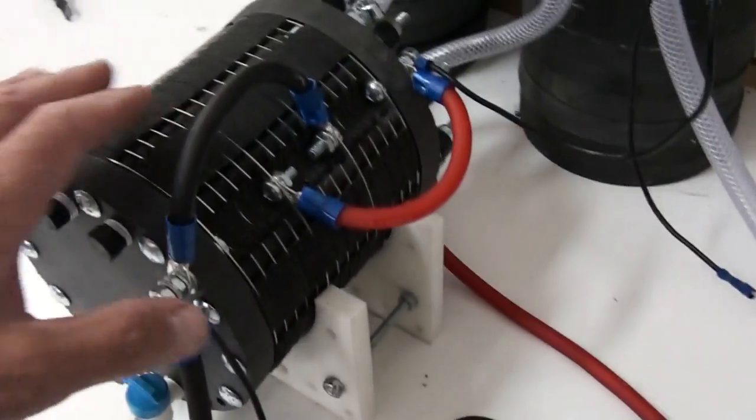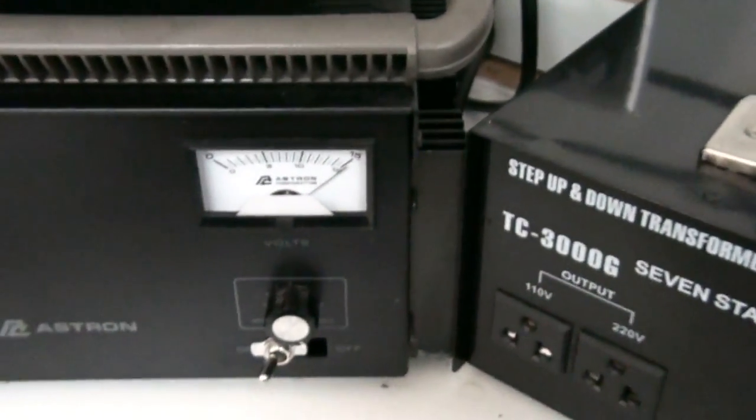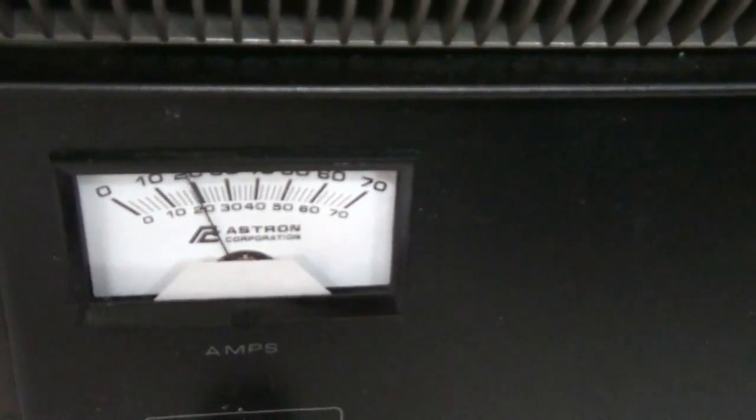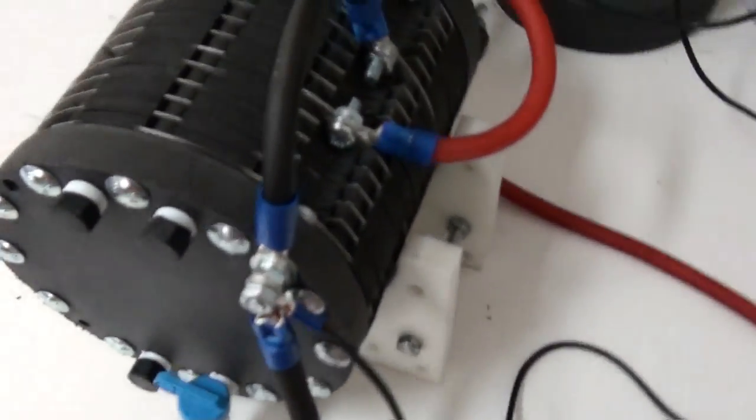Powering this cell is 12 volts, but we've actually got it set at 15 volts right now. You can see it's running about 20 amps. So 15 volts, 20 amps going to the cell.